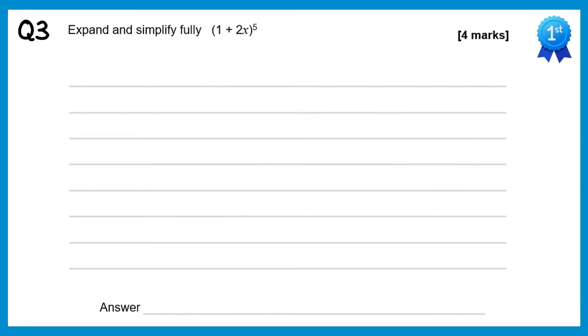For this question we have a bracket to the power 5, so we need the fifth row of Pascal's triangle: 1 5 10 10 5 1. If we compare this to (a+b)ⁿ then a is equal to 1 and b is equal to 2x.